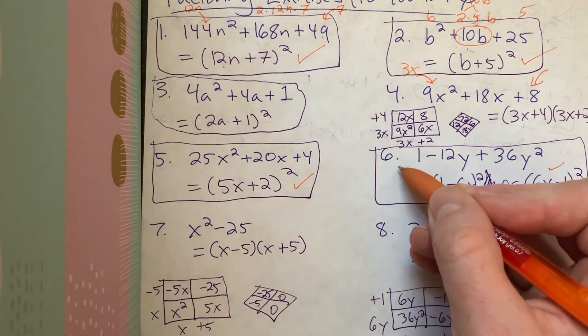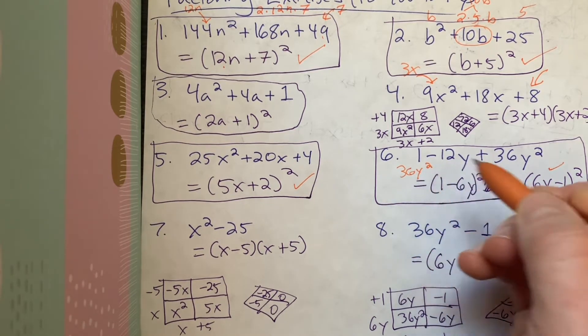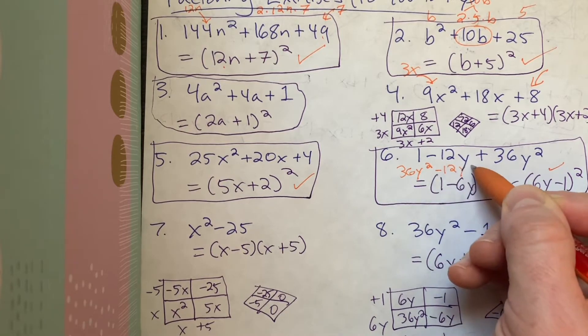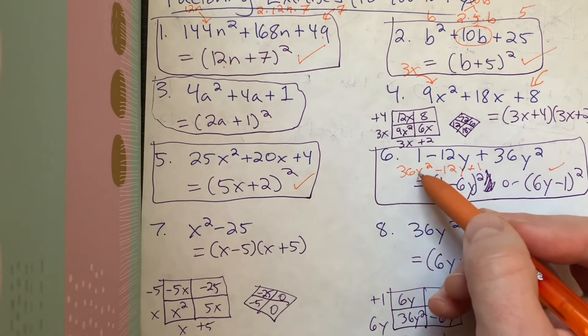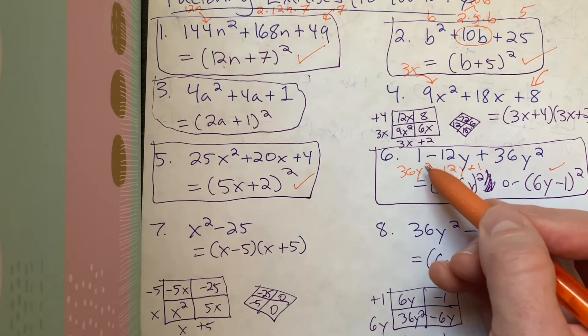But I wanted to point out that you could have reordered this into what's called standard form. So remember, a quadratic has a standard form. And a quadratic, remember a quadratic is that the highest degree of a term in the polynomial is 2.